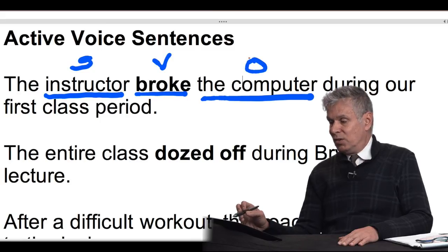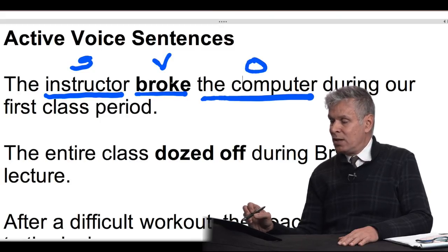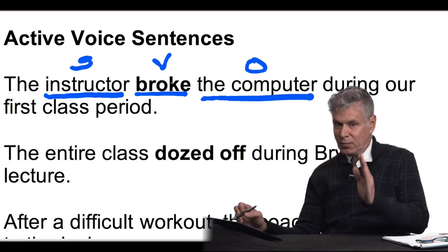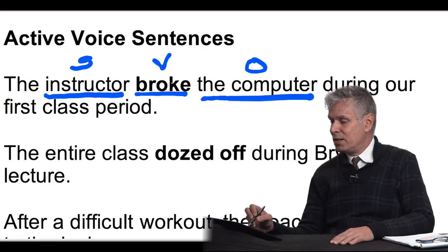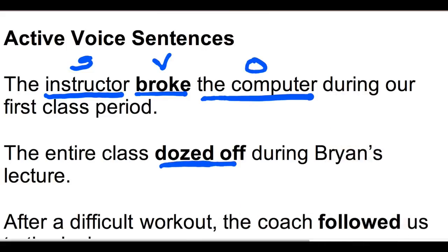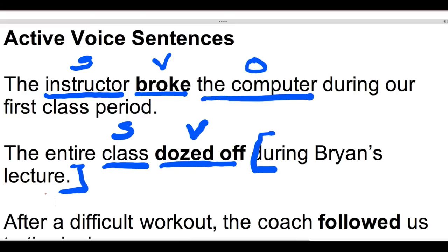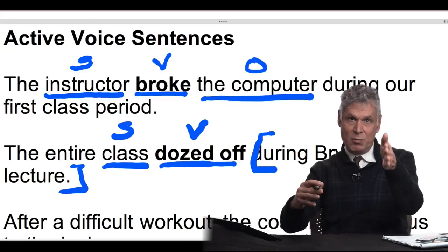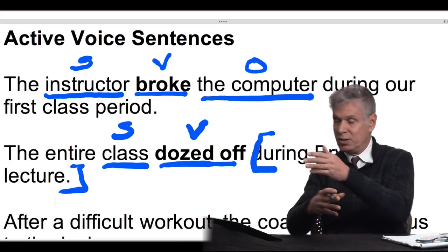So this is active voice. You have subject, verb, object. Now in this case, the verb is a transitive verb, but it's not always the case. In the second example, I have 'dozed off' as the verb, and 'class' is the subject. The class dozed off. Notice there's no object in this sentence — this is an intransitive verb. But notice the subject is still before the verb. That's the important thing: subject, verb, object, or subject, verb.